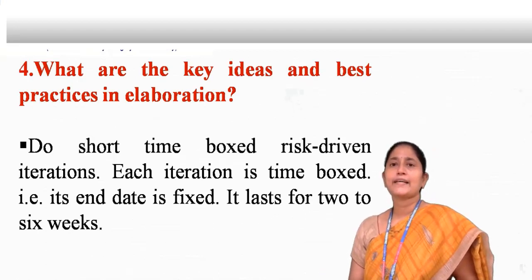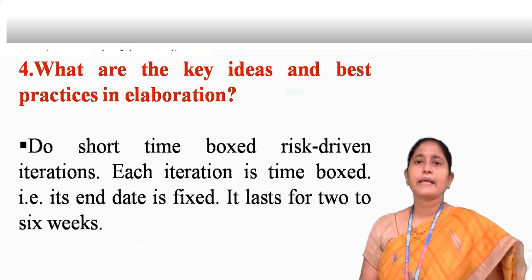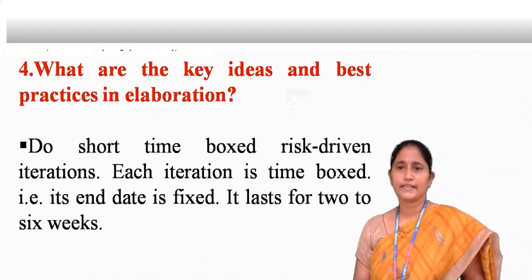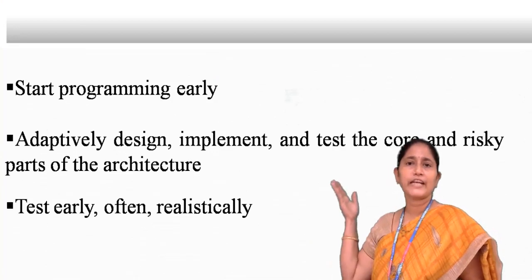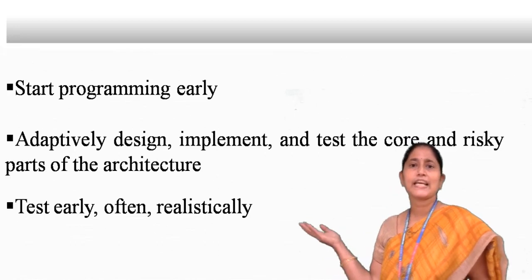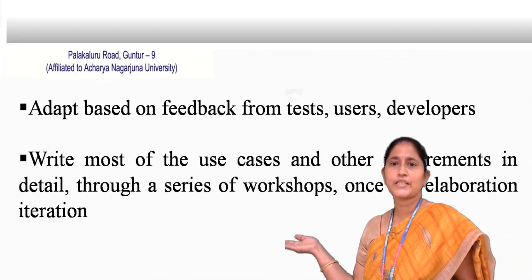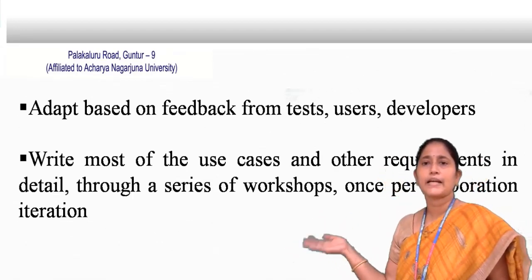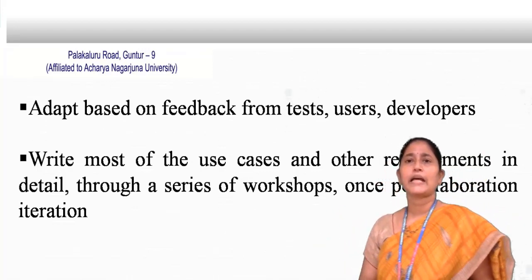The key ideas and best practices in elaboration include: do short time blocks and risk-driven iterations — the end date is fixed and iterations last two to six weeks. Start programming early. Adaptively design, implement, and test the core and risky parts of the architecture. Test early, often, and realistically. Adapt based on feedback from test users and developers. Write most of the use cases and other requirements in detail through a series of workshops, one per elaboration iteration.